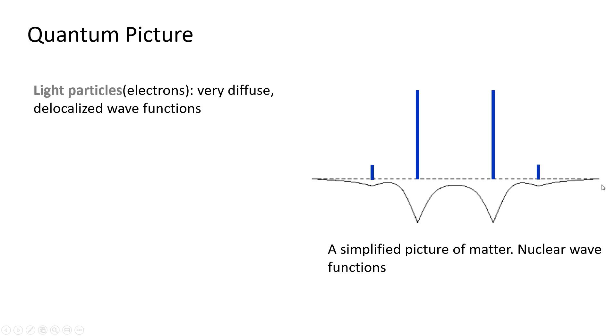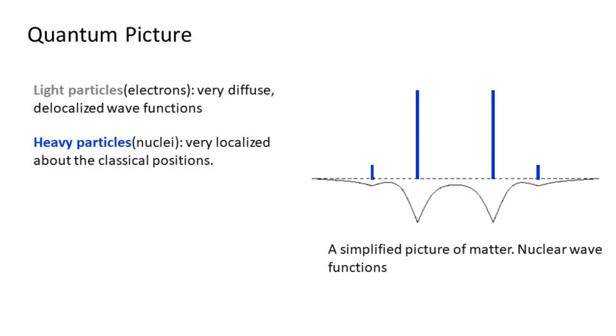For heavy particles, that is nuclei, the wave function will be very localized about the classical positions. From these observations throughout this discussion, we found that for an external perturbation, both these electrons and nuclei are going to behave totally differently because of their difference in mass.